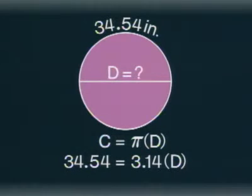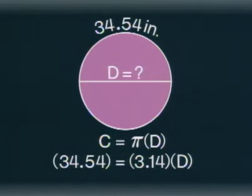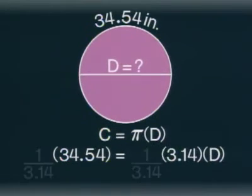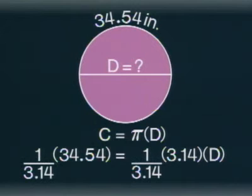You want to solve for D, so you must get D alone on this side. D is multiplied by 3.14, so you multiply both sides by 1 over 3.14.